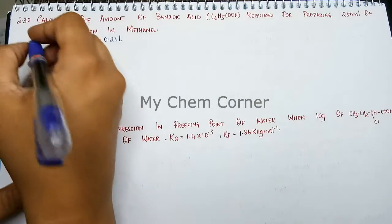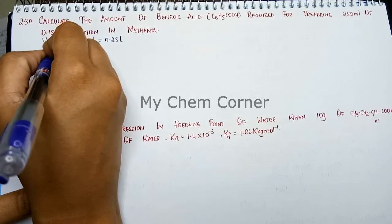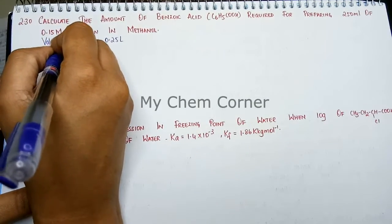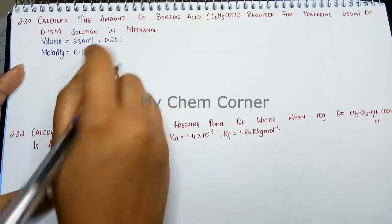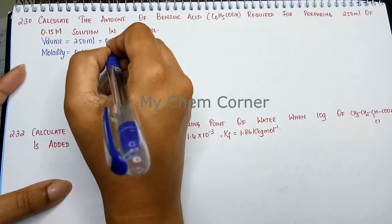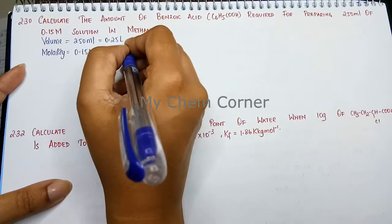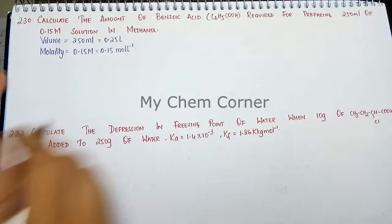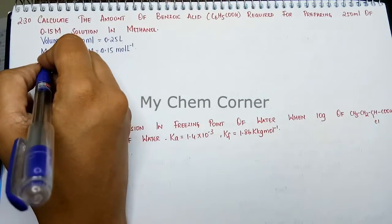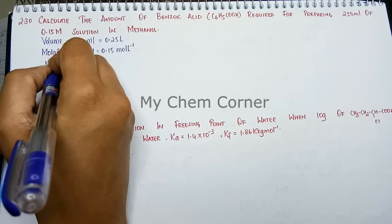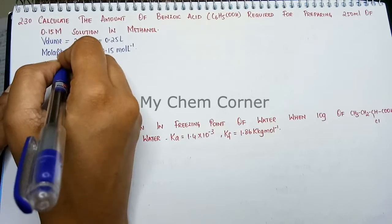The molarity here is 0.15 molar, or we can write it in SI units as 0.15 mole per liter. We need to calculate the given weight, so let's write the formula for molarity.